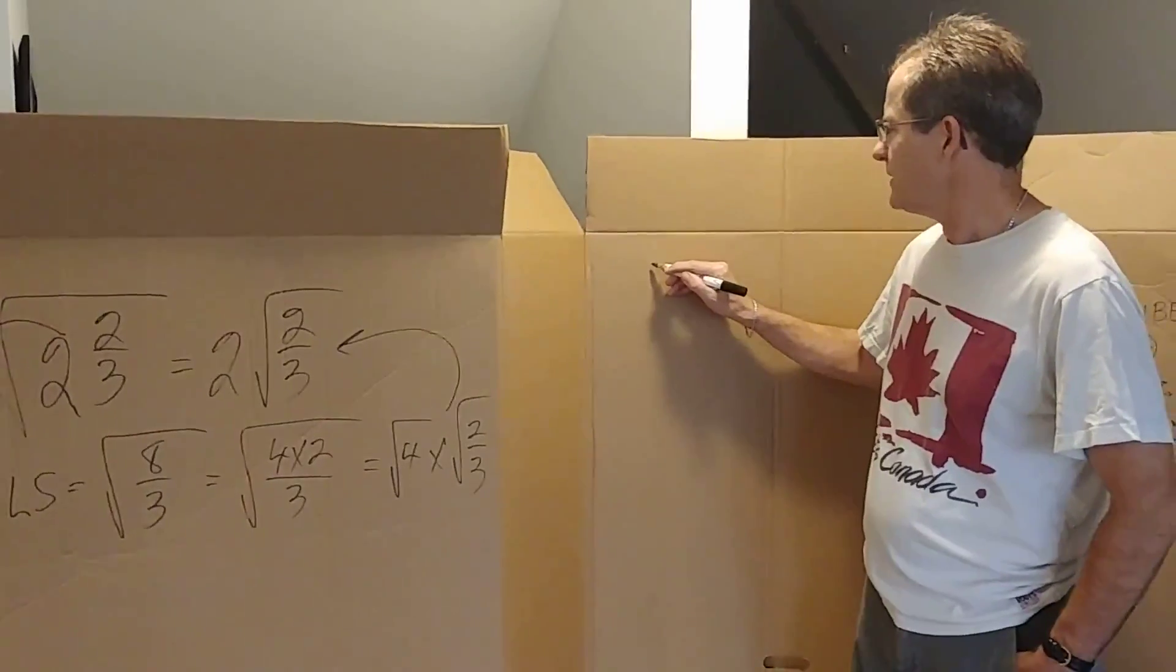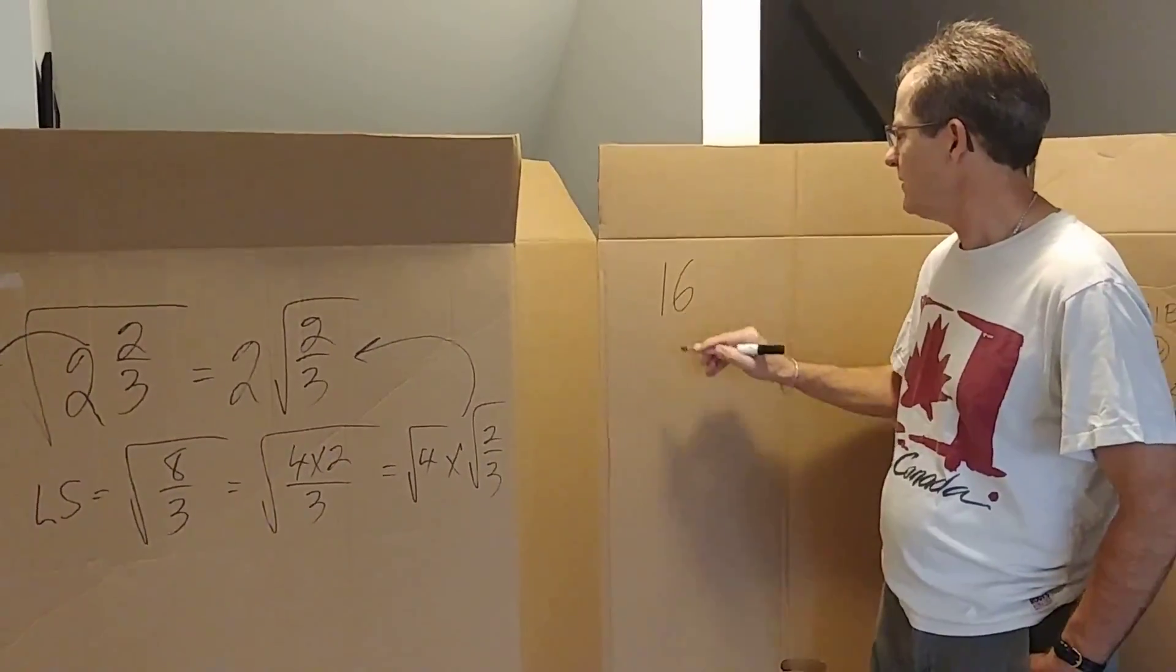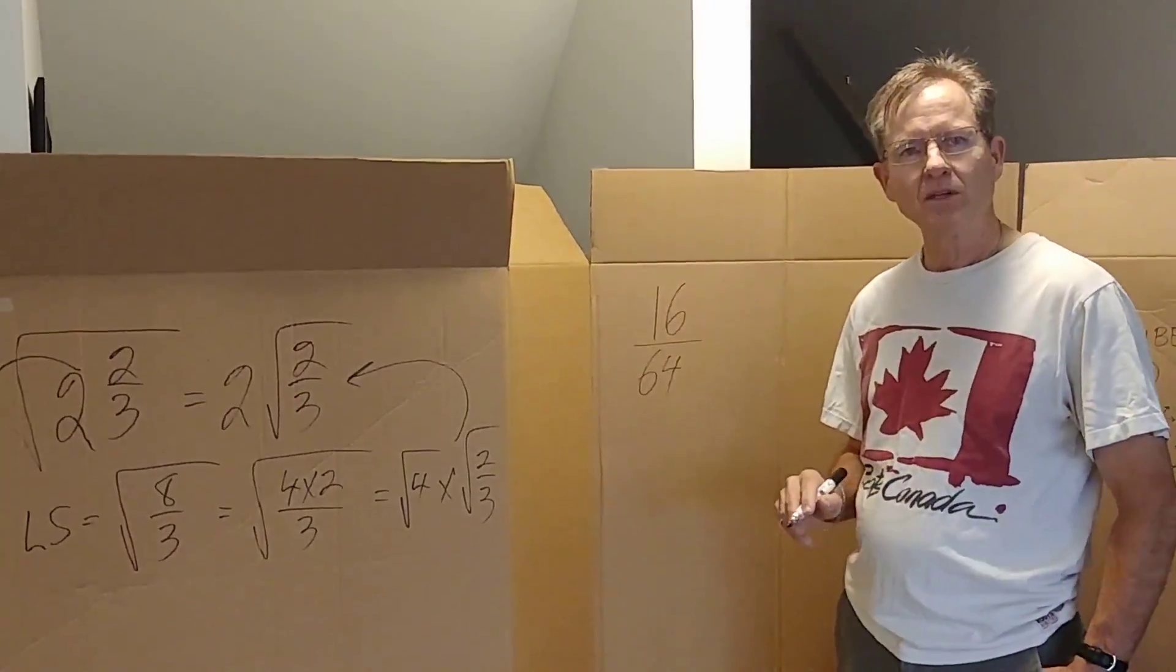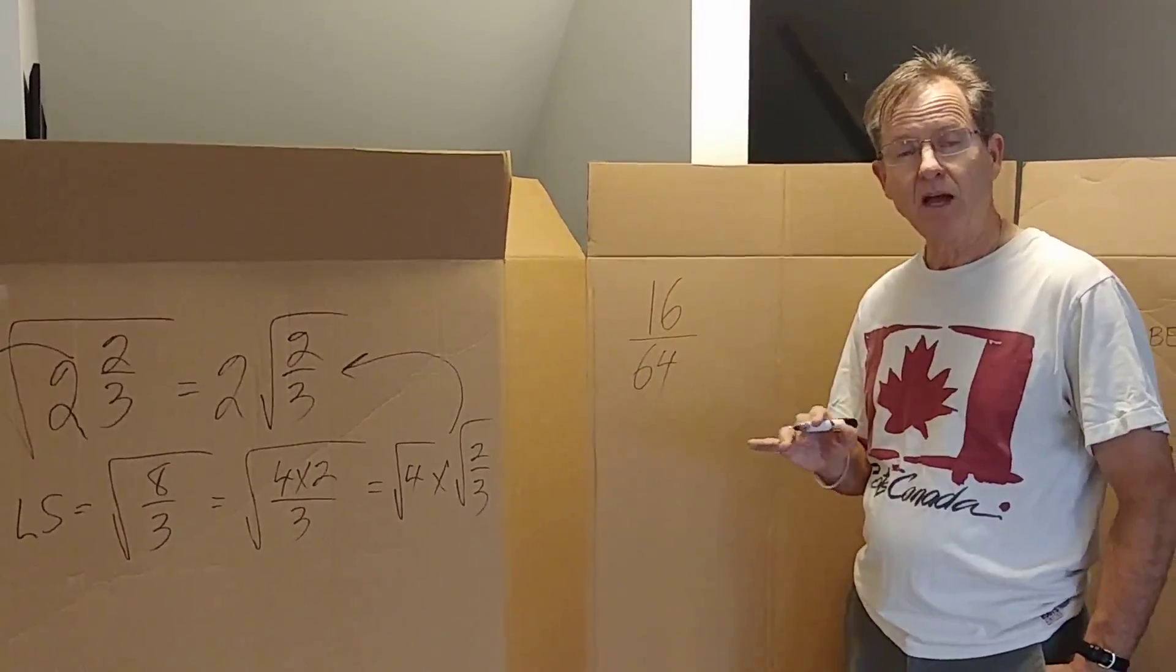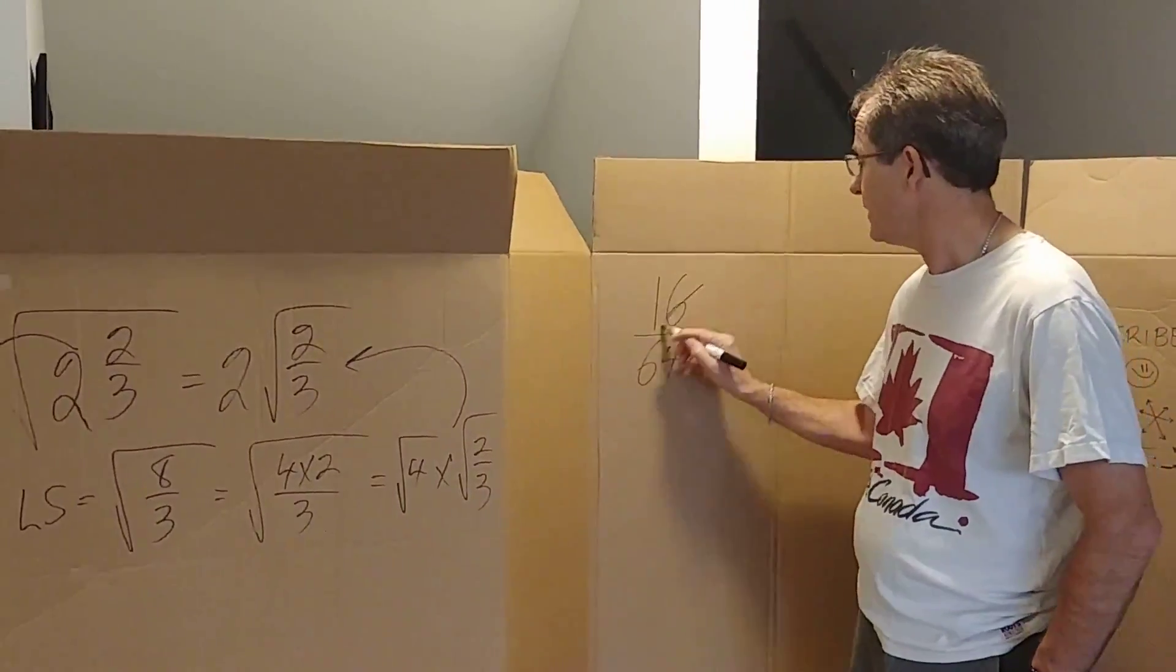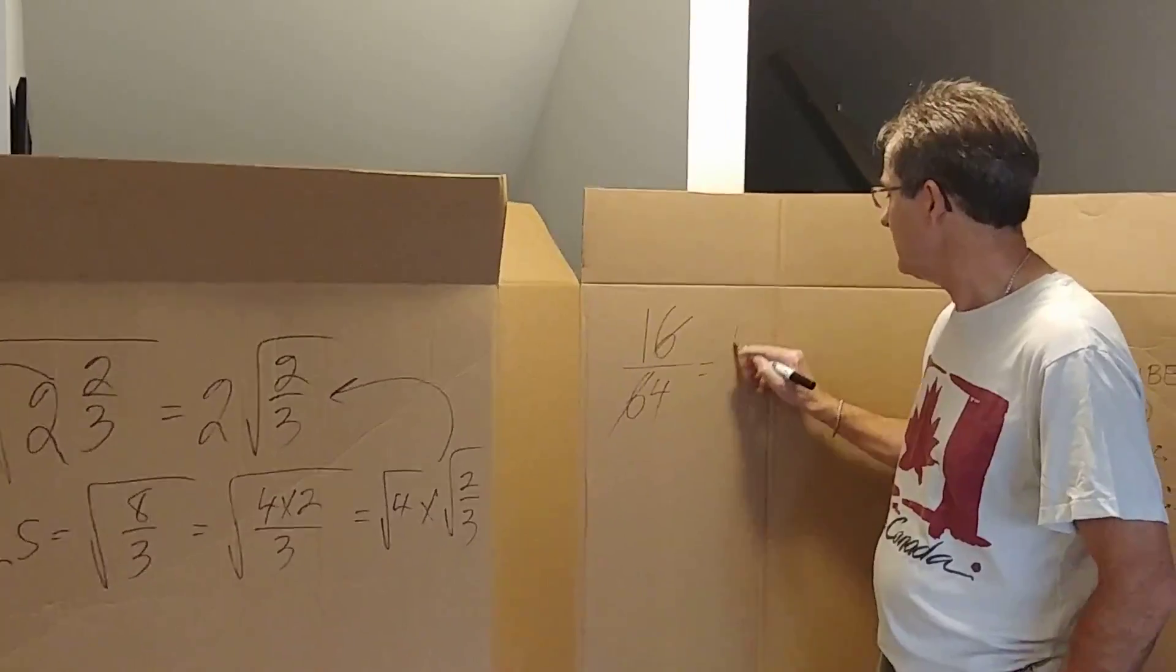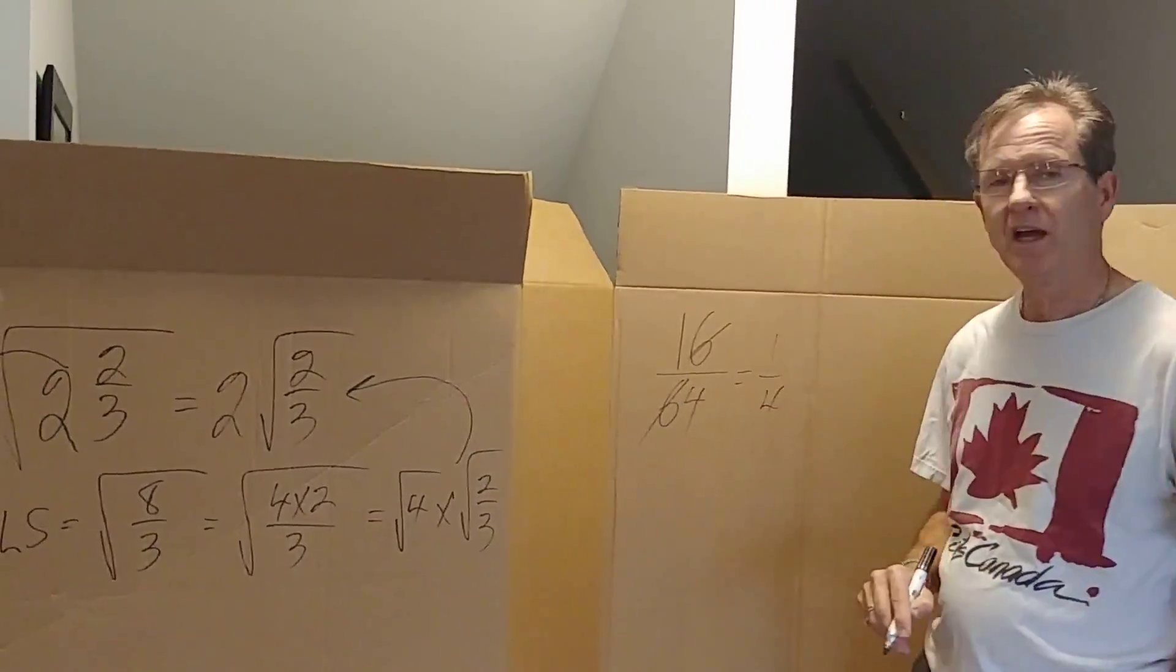Let's say you have for example 16 over 64. If you want to reduce that the thing you must not do, you absolutely cannot do is cross out the 6s, right? Because if you did that you would get 1/4, which would be absolutely wrong.